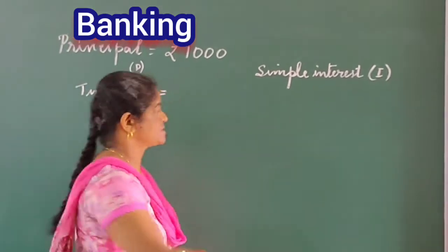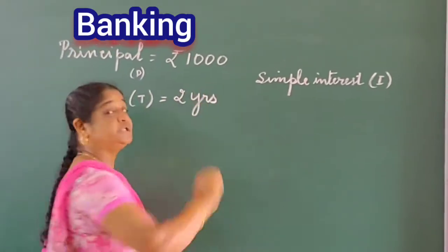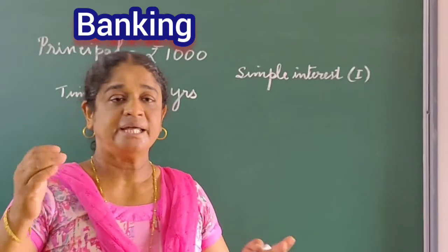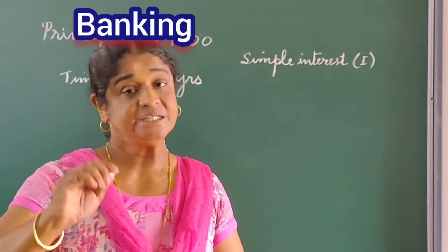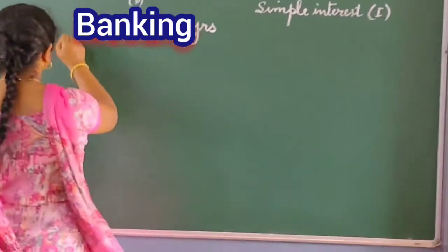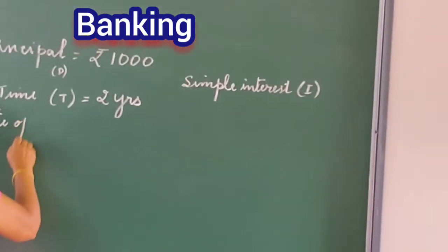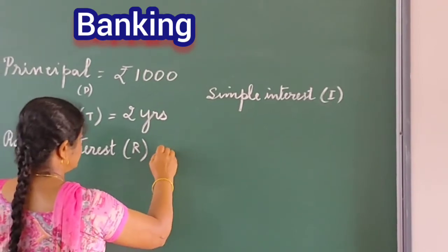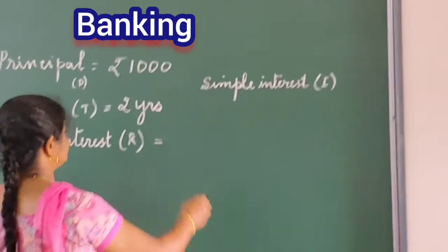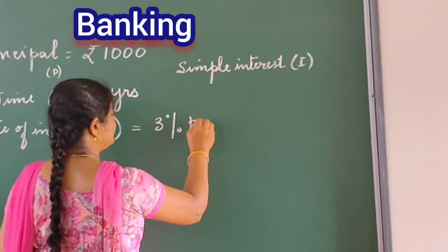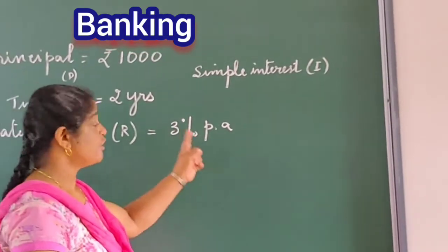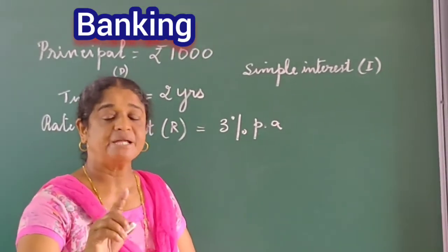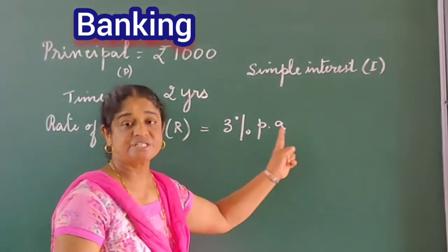Let us suppose we keep the money in the bank for two years, so the time here is two years. Now, there is a particular interest which the bank charges — the interest on 100 rupees for one year — and that is called the rate of interest, represented by the letter R. It is represented in percentage. Let us suppose it is 3% per annum. Per annum means for one year. So for one year, for 100 rupees, the bank gives 3 rupees interest.